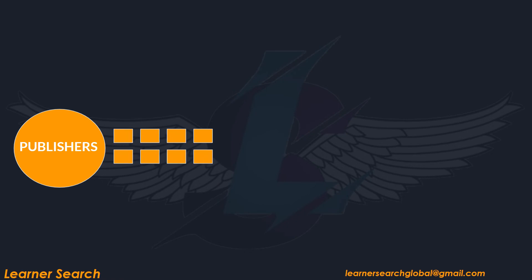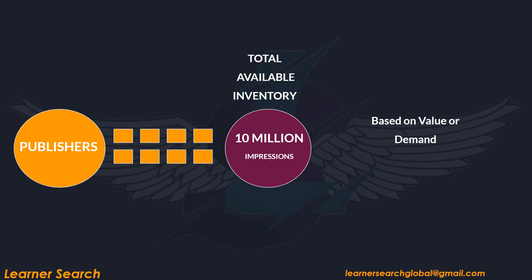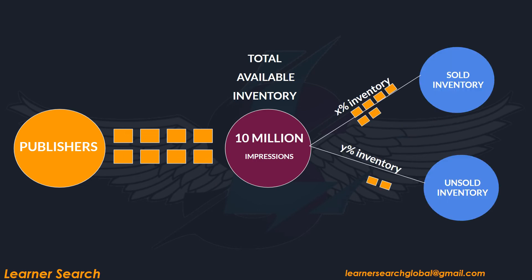Based on the concepts discussed, let's look at different types of inventory. A publisher is ready to sell 10 million impressions. Depending on market value and demand, there are two types of inventory. First is sold inventory, where a certain percentage is sold to advertisers. The other type is unsold inventory — the leftover impressions not purchased by anyone. Premium inventory refers to inventory that has been sold, and remnant inventory refers to unsold inventories.